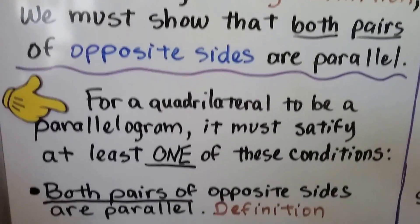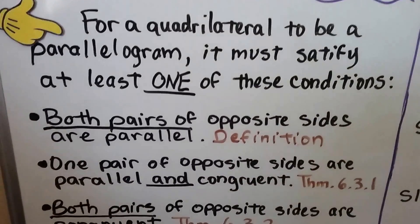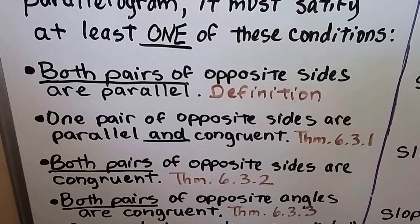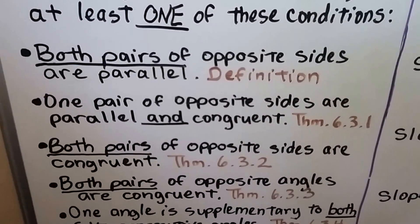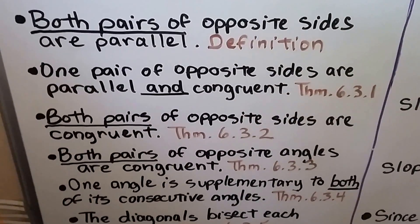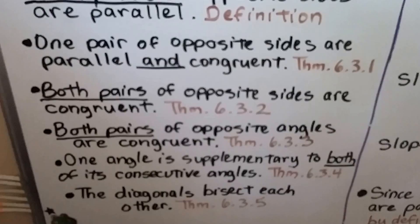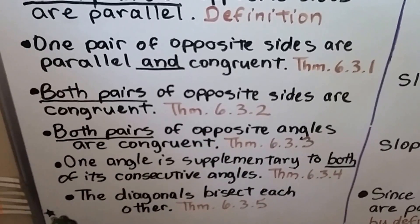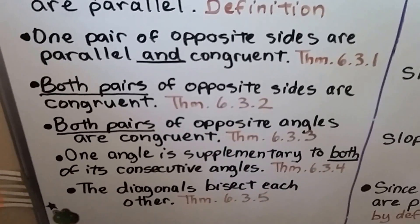For a quadrilateral to be a parallelogram, it must satisfy at least one of these conditions. Both pairs of opposite sides are parallel—that's the definition. One pair of opposite sides are parallel and congruent—that was the first theorem from the last video.